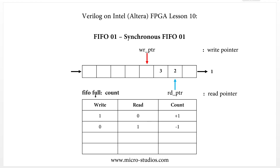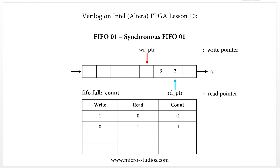The next situation: we didn't write any data into the FIFO (write is 0), but we read out one data item — we read the value 1 out of the FIFO. So the count variable decreases by one (minus 1). Now there are two data items inside the FIFO.